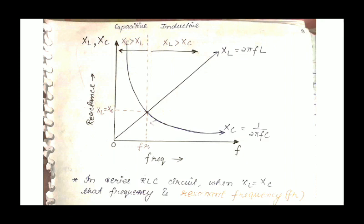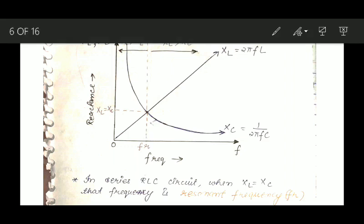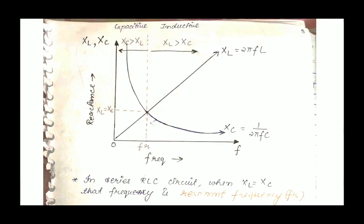For frequency less than the resonant frequency, from the graph we can see that XC is greater than XL, so the series RLC circuit behaves as a series RC circuit — it shows a capacitive effect. For frequency greater than the resonant frequency, XL is greater than XC, meaning the circuit behaves as an inductive circuit.